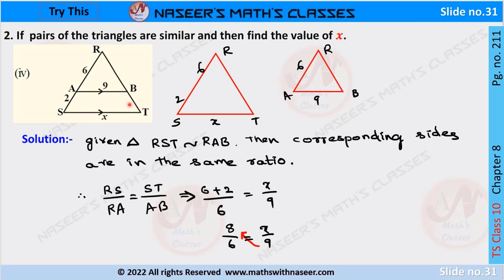Pair of triangles RST and RAB are given. If these two triangles are similar, then we have to find the value of x. We already know that if two triangles are similar, then their corresponding sides are in the same ratio. So we can write RS by RA is equal to ST by AB. Now we substitute the given values: 6 plus 2 by 6 is equal to x by 9. 6 plus 2 is 8, so we can write it as 8 by 6 is equal to x by 9.